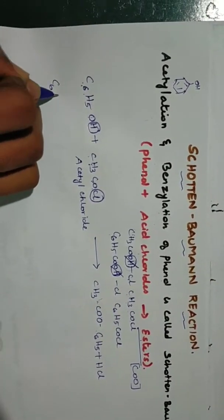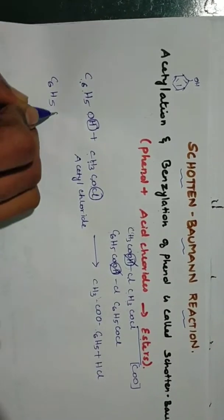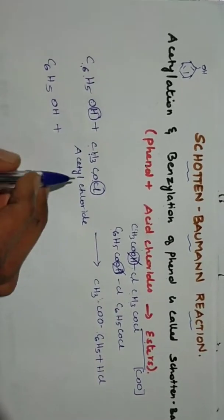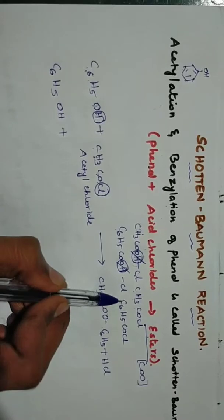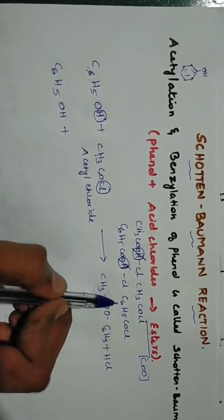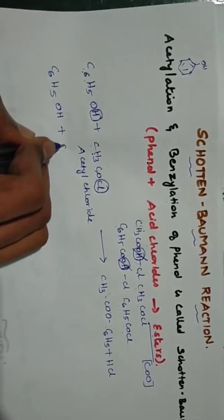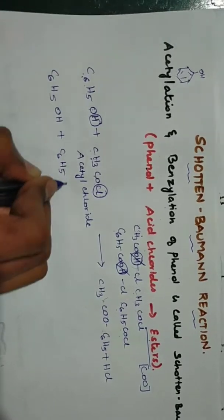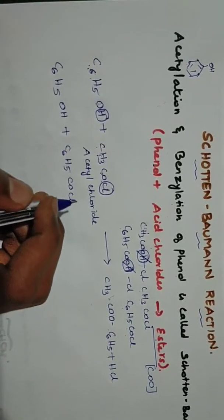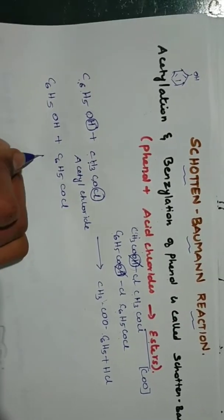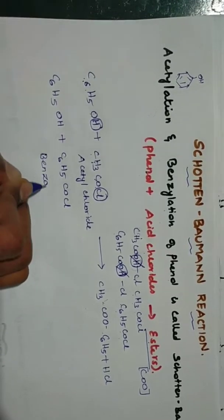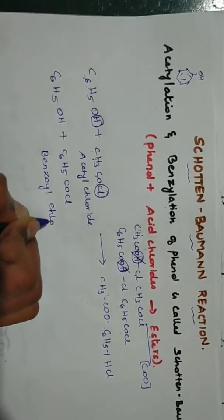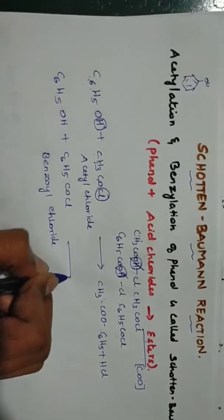Phenol plus C6H5COCl, benzoyl chloride. So C6H5COCl, benzoic acid chloride, we call it benzoyl chloride.